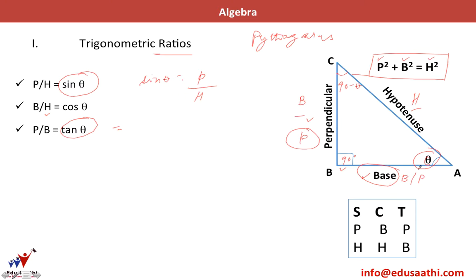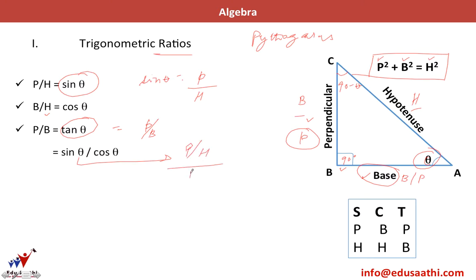Perpendicular is the side opposite to theta, and base is the side adjacent to theta. So tan theta equals P by B. Also, tan theta can be written as sin theta divided by cos theta. If you solve this: sin theta is P/H and cos theta is B/H, so dividing gives P/B, which confirms tan theta equals P by B.